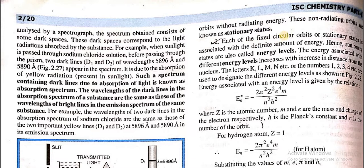The second postulate: each of the fixed circular orbits, or stationary states, is associated with a definite amount of energy. The orbits around the nucleus — these fixed, stationary orbits — possess a definite amount of energy, and hence stationary states are also called energy levels. The energy associated with different energy levels increases with the increase in distance from the nucleus.